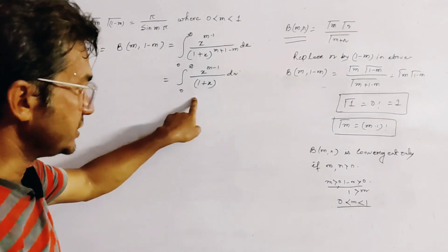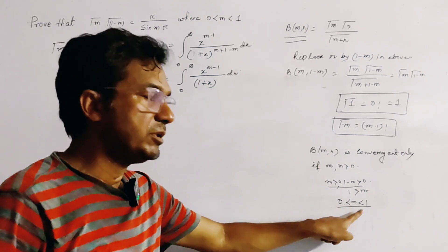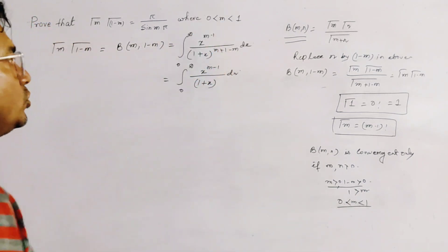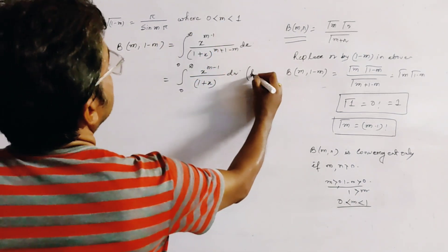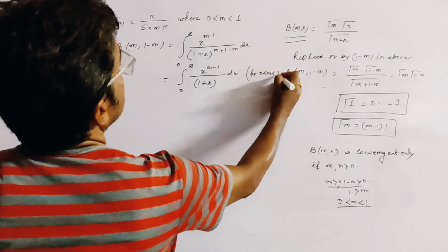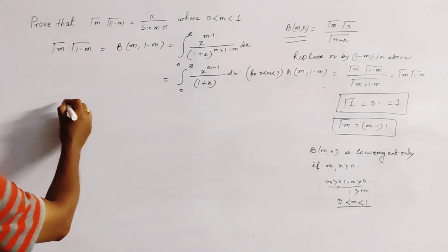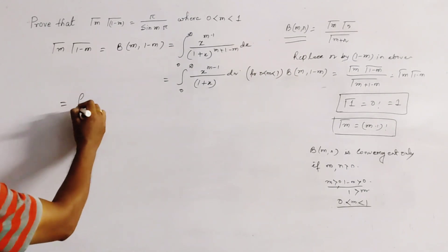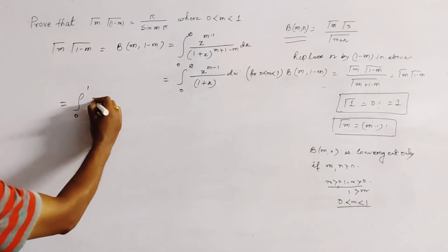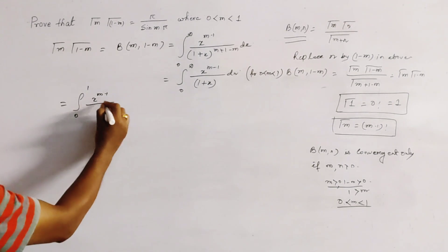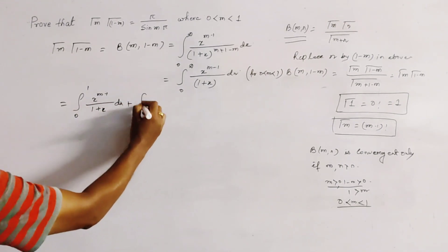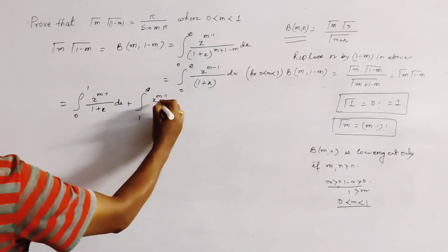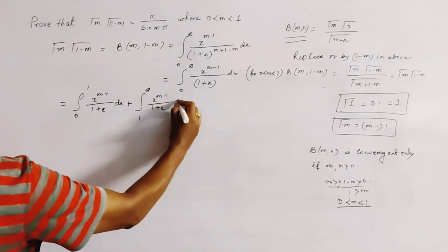This integration is convergent only when 0 < m < 1, as stated at the top. We split the integral into two parts: ∫₀^∞ = ∫₀^1 x^(m-1)/(1+x) dx + ∫₁^∞ x^(m-1)/(1+x) dx.